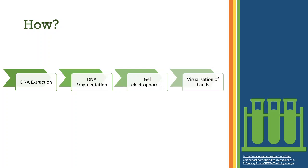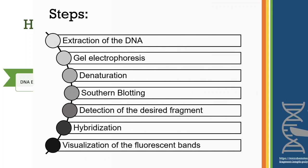So, how is it done exactly? First of all, we have to extract the DNA, then comes DNA fragmentation and this is followed by gel electrophoresis and after that visualization of the bands. These are the exact steps.